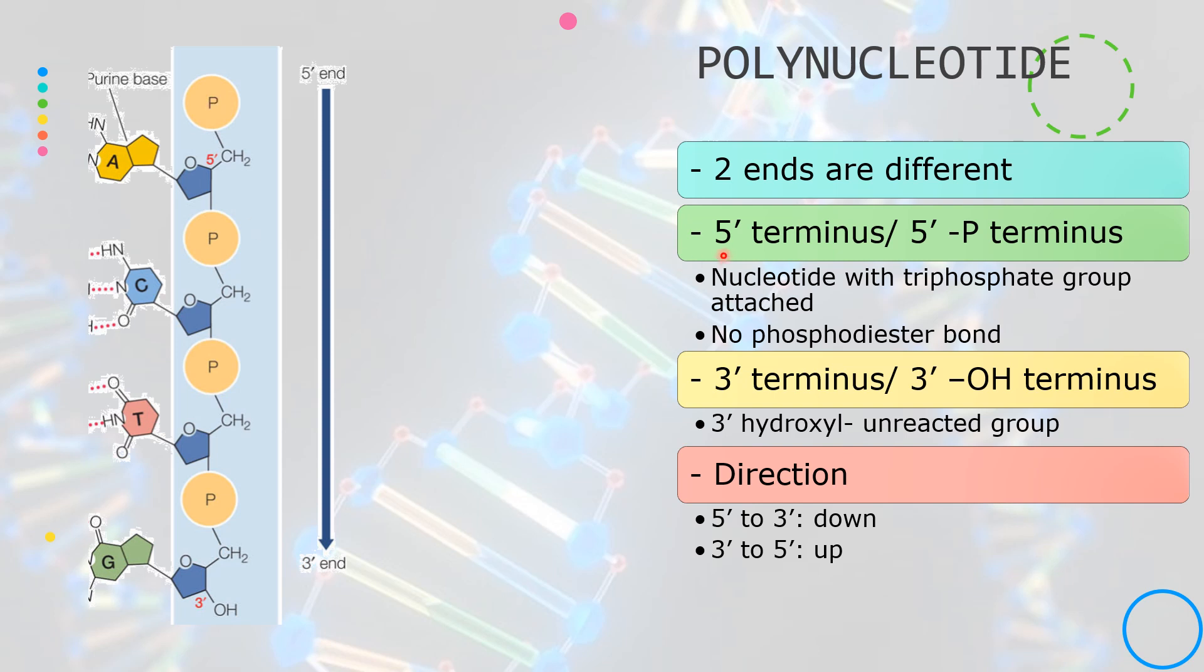This end is called the 5' terminus or the 5' P terminus. On the other end of the molecule, the unreacted group is not a phosphate group but the 3' hydroxyl.